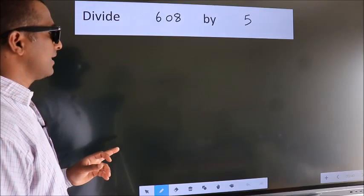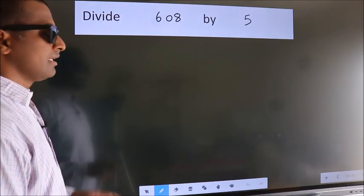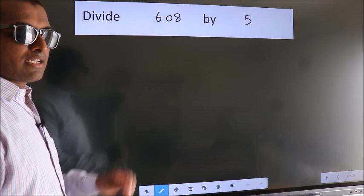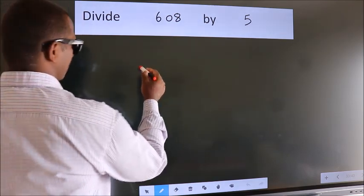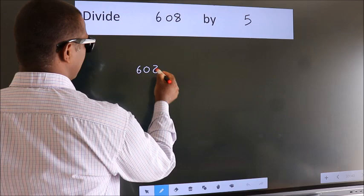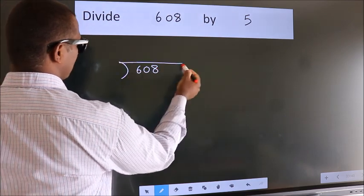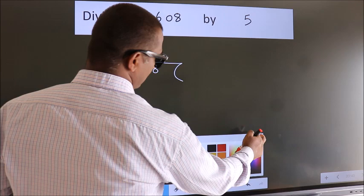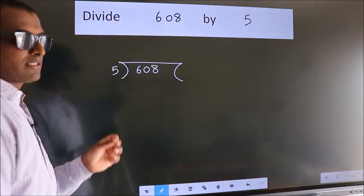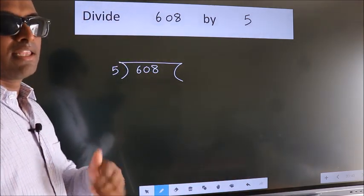Divide 608 by 5. To do this division, we should frame it in this way: 608 here, 5 here. This is your step 1.